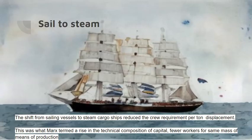What about crews? What was happening over that period was the transition from sailing ships to steamships. When Marx wrote Capital, most international cargo was still carried on sailing ships; by 1900, most new cargo ships were steamships — sailing ships still existed but had lost their dominant position. This meant a big reduction in the crew requirement per tonne of displacement, since a sailing ship requires enough crew to operate all the sails. This is what Marx called a rise in the technical composition of capital: fewer workers for the same mass in tonnes of the means of production.